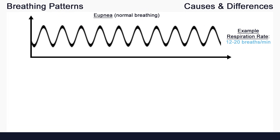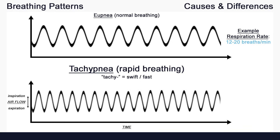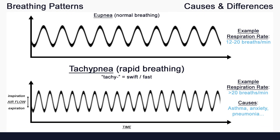Keeping eupnea here for reference, we'll move on to tachypnea. Tachypnea, or rapid breathing, looks very similar to normal breathing, but as you can see, the inspirations and expirations occur much faster. So with tachypnea, you get more breaths per minute. Tachypnea can be caused by so many different problems, including asthma, anxiety, pneumonia, and so much more.